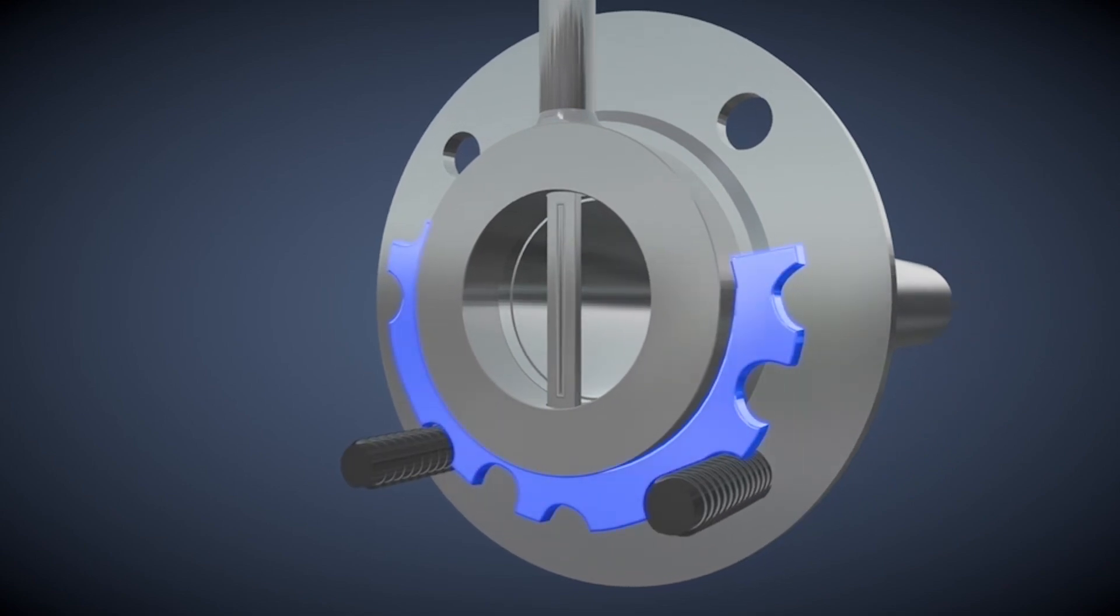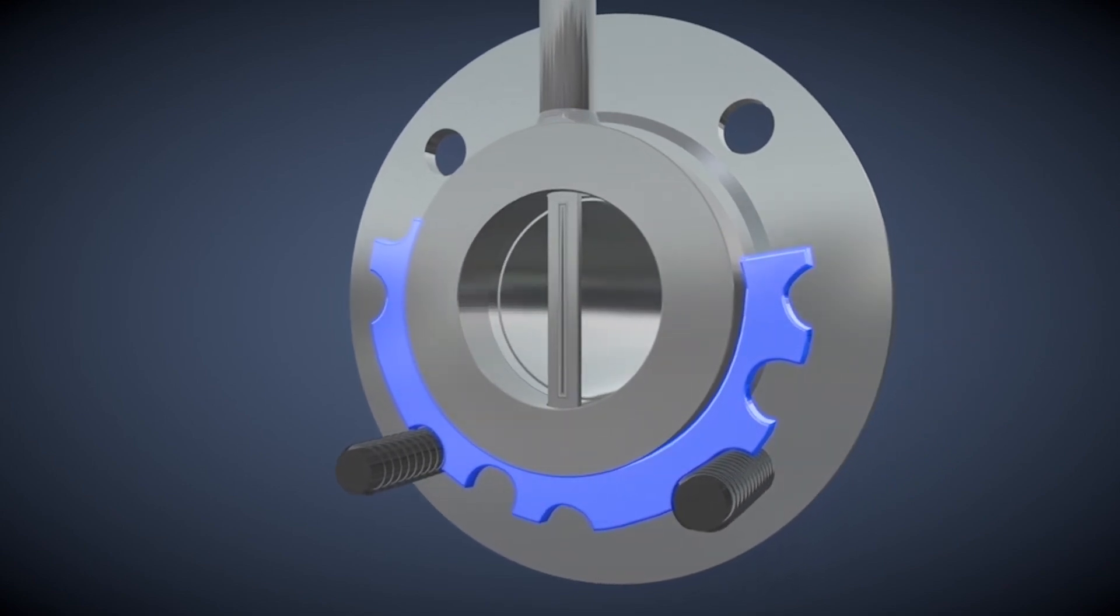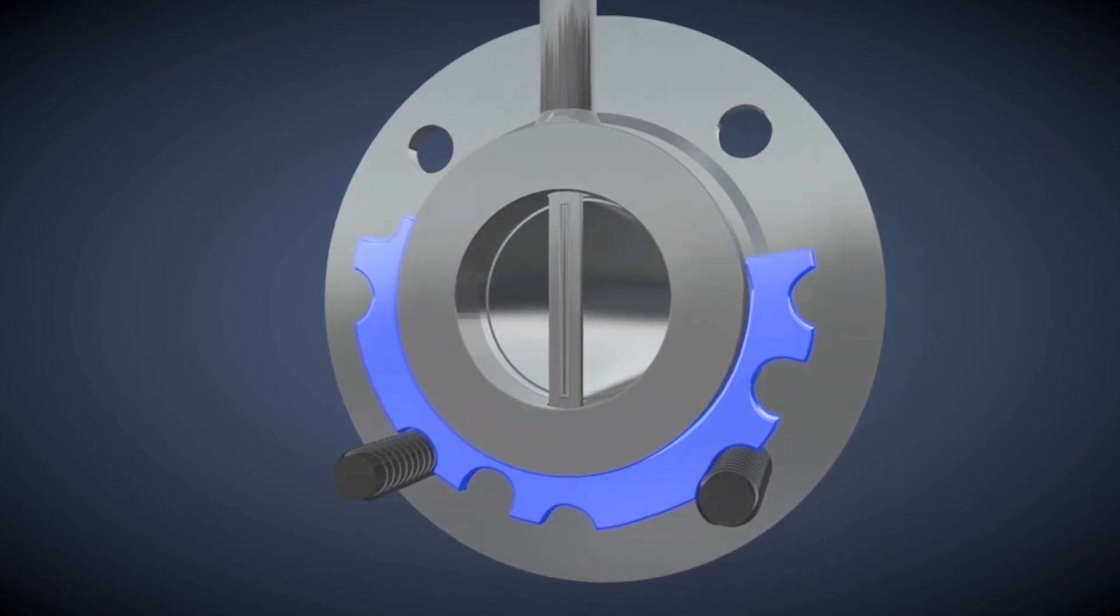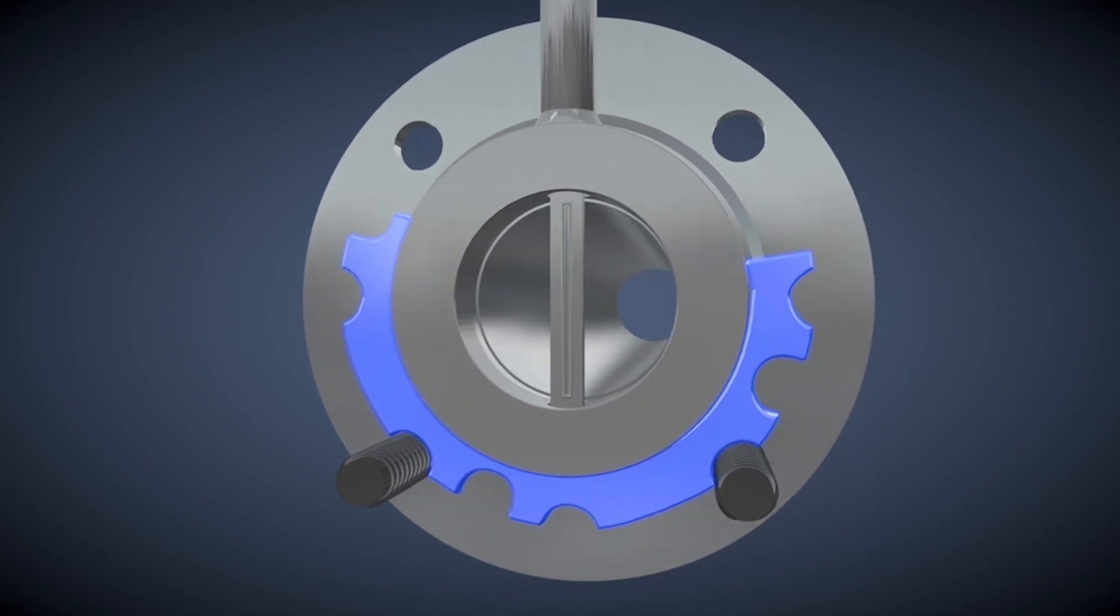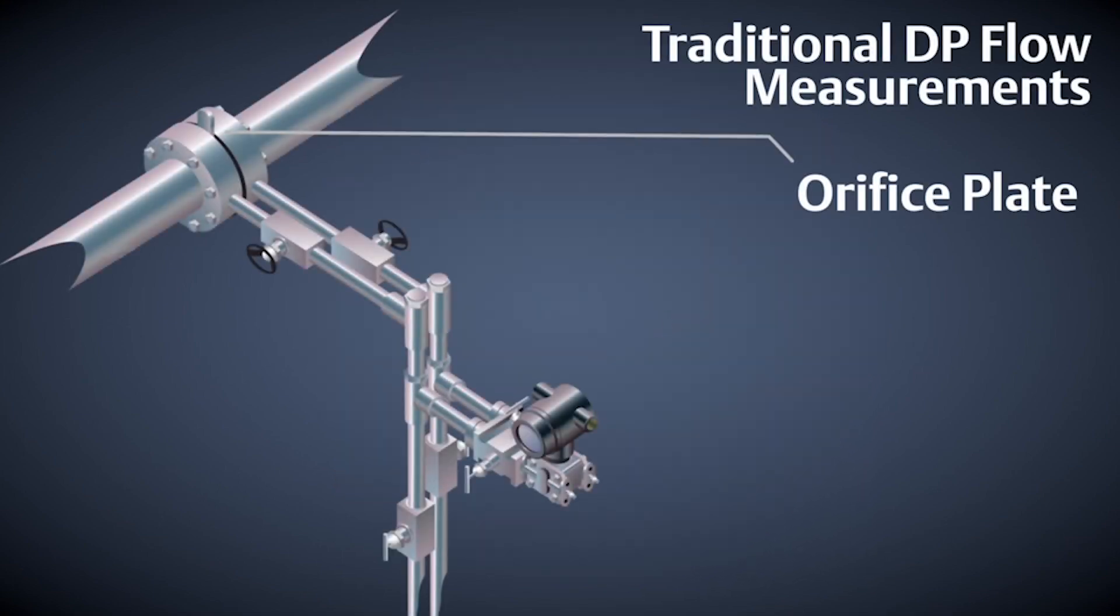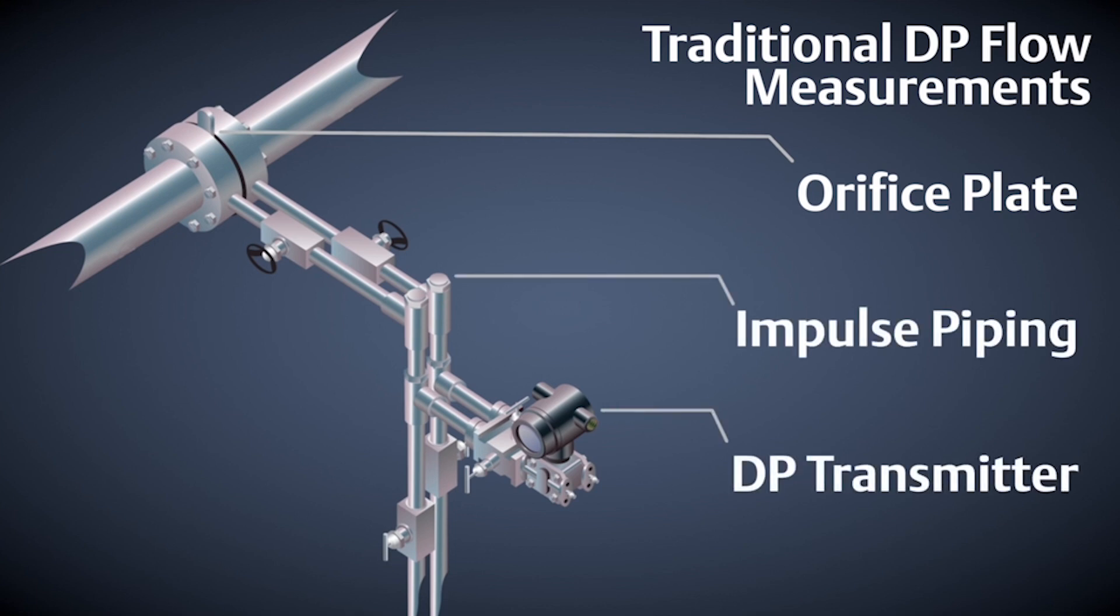This eliminates accuracy errors associated with misalignment, which are magnified in smaller line sizes. Traditionally, DP flow measurements were made with a standard orifice plate coupled with impulse piping leading to a DP transmitter.